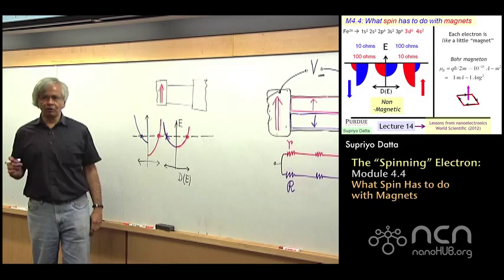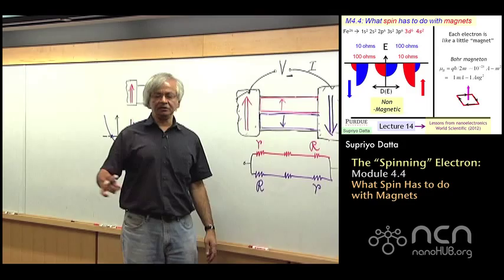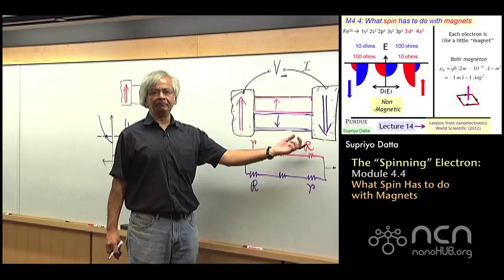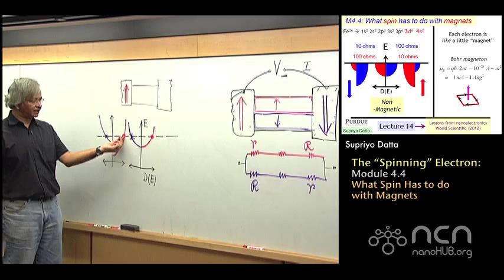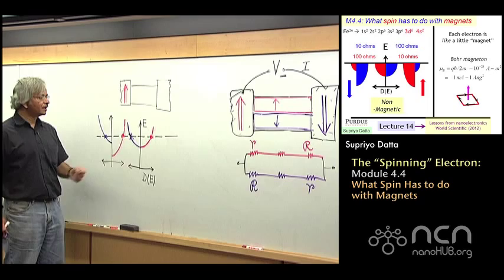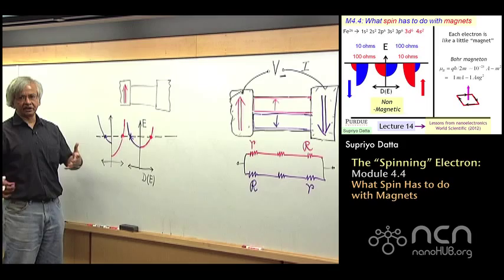On the other hand, when you have a blue electron trying to get out, it sees far fewer states are available. So it is harder to get out, and correspondingly, the resistance is higher. This is exactly what we tried to capture in this circuit model that we have been using—a small R and a big R.